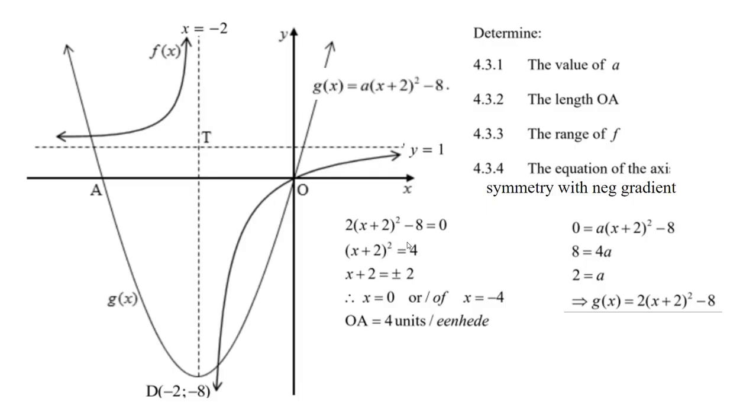And then they do a nice little trick here. You could make it into a quadratic, but they just take the square root. x plus 2 equals plus or minus 2. So x is 0 or minus 4. So that's using algebra to get it. But I think you'd have to be able to say by symmetry, a must be minus 4. I think you'd get the marks that way, too.